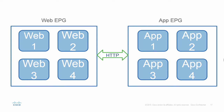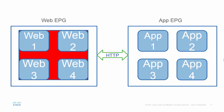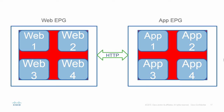So let's talk about intra-EPG isolation. When we enable or enforce intra-EPG isolation, we actually block communication within the endpoint group, and we block it for everything. So web one can't communicate with web four, app one can't communicate with app four, etc.